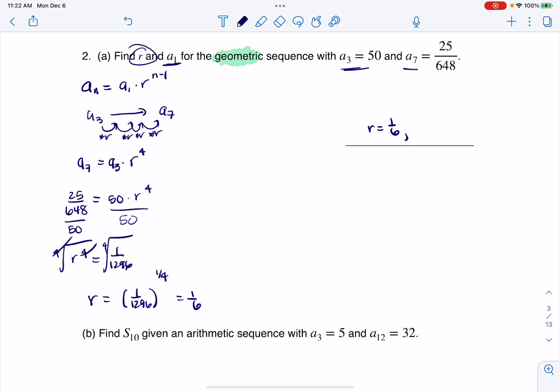The next thing I need to do apparently is find a sub one. So again, we're going to go back to our formula and use that. But I'm going to use, since I have a sub three, I'm going to say a sub three is a sub one times r squared, because it takes two multiplications of this ratio to get from a one over to a sub three. So we would know 50 is equal to a sub one times one-sixth squared. So 50 equals a sub one times one over 36. I'm going to multiply both sides by 36. And if you think about 50 times 36, that's going to give me 1800. So a sub one is going to be 1800. And there I am.